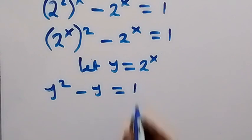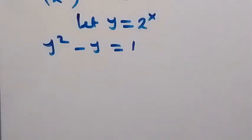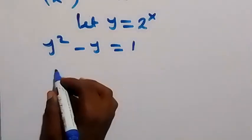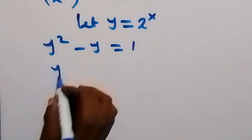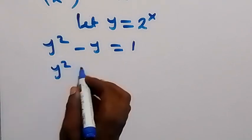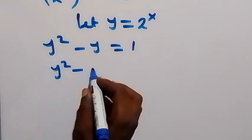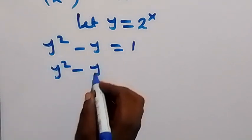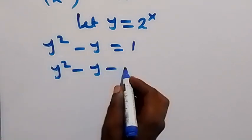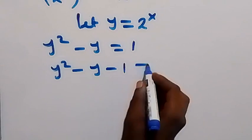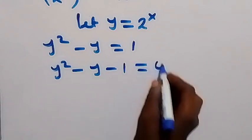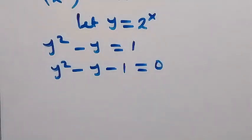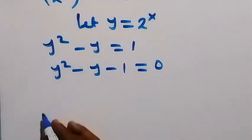Now we can form a quadratic equation by taking 1 to this side. So we have y squared minus y minus 1 equals to 0. Then we have a quadratic equation.